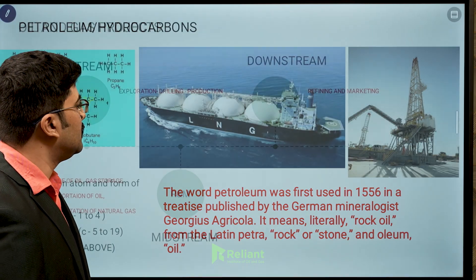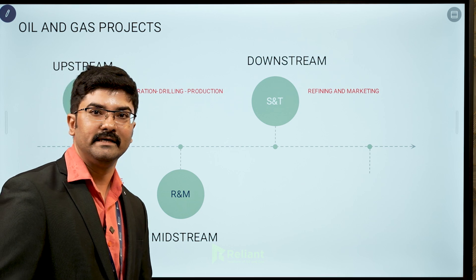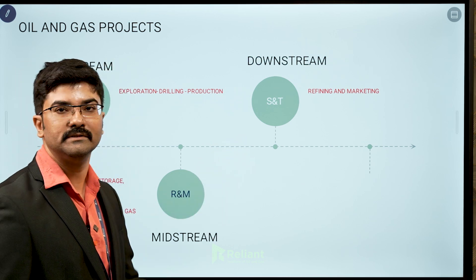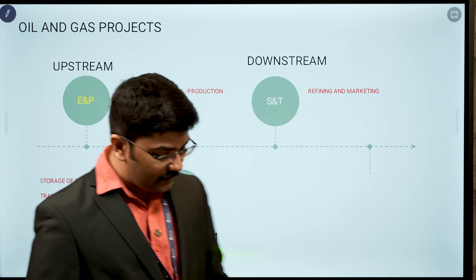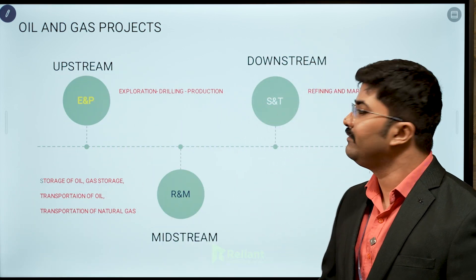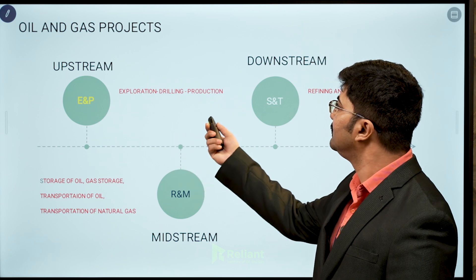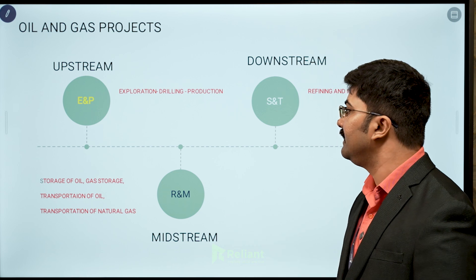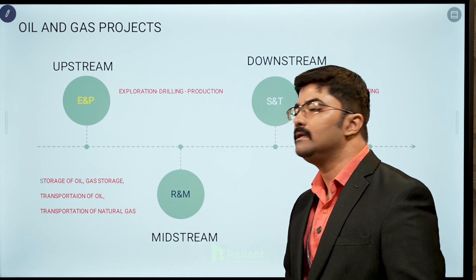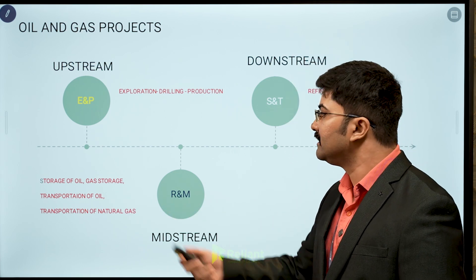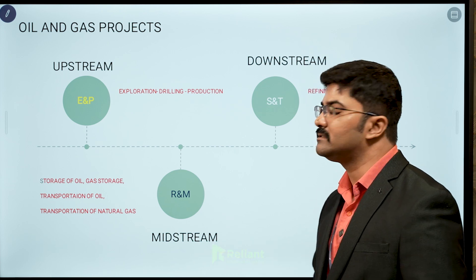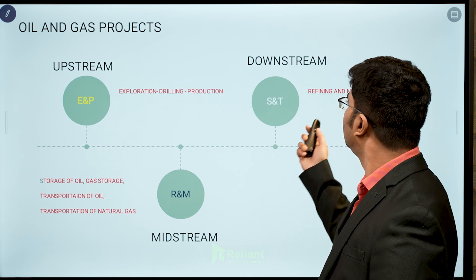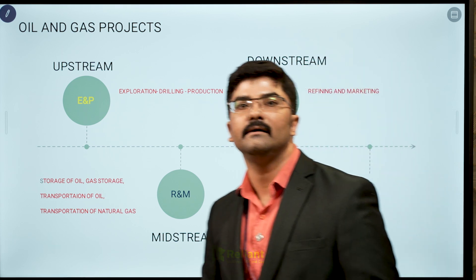When we talk about the oil and gas industry, it is widely divided into three sectors: upstream, midstream, and downstream. Upstream involves exploration, drilling, and production. In the case of midstream, it covers storage of oil, storage of gas, oil transportation, and natural gas transportation. When it comes to downstream, it involves refining and marketing.